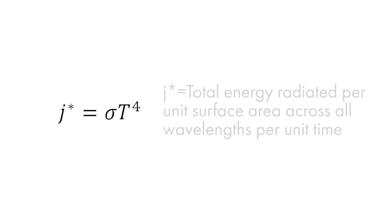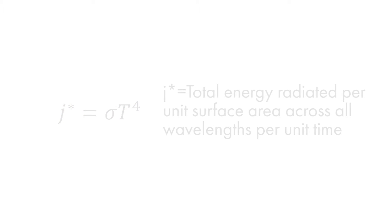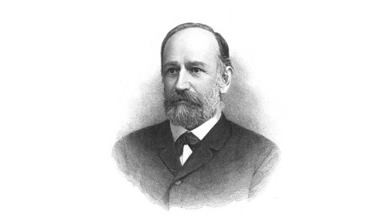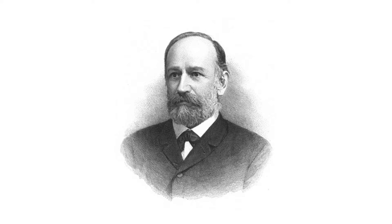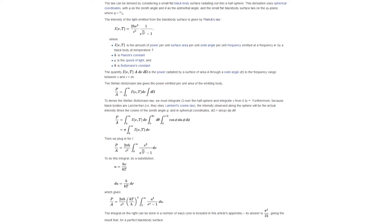Another resulting law from blackbodies is the Stefan-Boltzmann law. We use this to find the total energy that is radiated from a blackbody, which is proportional to the object's temperature. This of course includes the Stefan-Boltzmann constant. This law allowed Joseph Stefan to correctly determine the temperature of the surface of the sun, his being the first reasonable calculation. Funnily enough, the law can be derived from Planck's law.